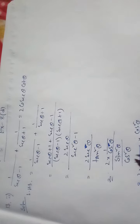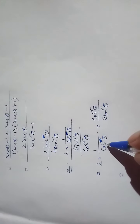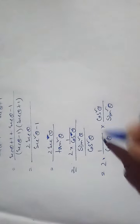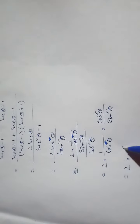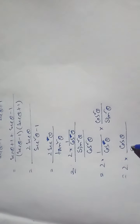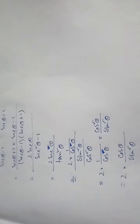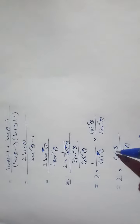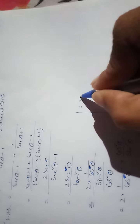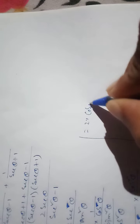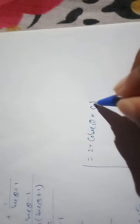So this becomes 2secθ / tan²θ. We can write secθ as 1/cosθ and tan²θ as sin²θ/cos²θ. The cosθ terms cancel, leaving 2/(sinθ · (sinθ/cosθ)), which simplifies to 2cosθ/sin²θ, giving us 2·(1/sinθ)·(cosθ/sinθ), which equals 2cosecθ·cotθ — the right-hand side.